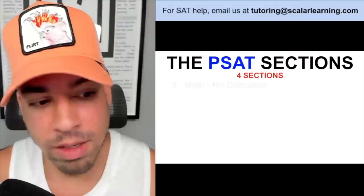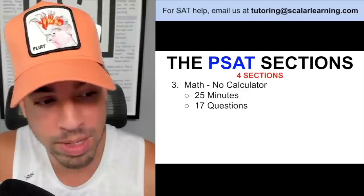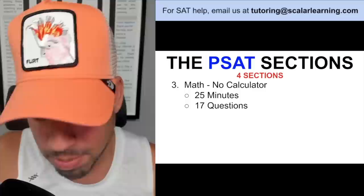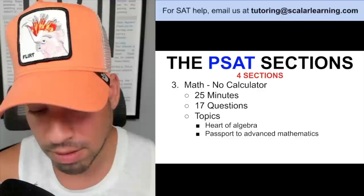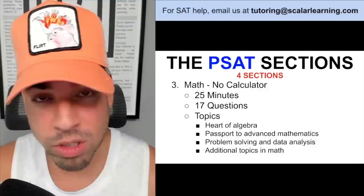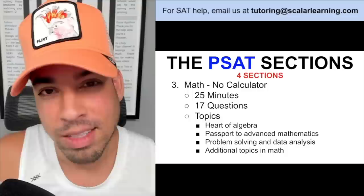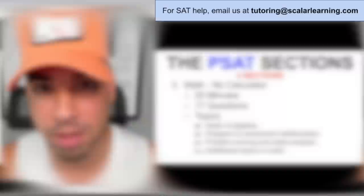There are two math sections. The first is the no-calculator section: 25 minutes, 17 questions. Topics include heart of algebra, passport to advanced mathematics (algebra 2 topics like advanced quadratics and polynomials), problem solving and data analysis, and additional topics like geometry and trigonometry. Importantly, a reference sheet with area/volume formulas and the Pythagorean theorem is provided at the front of the test.